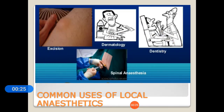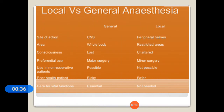The most common uses of local anesthetics are in exercises, dermatology, dentistry, and spinal anesthesia. The main importance of local anesthetics compared to general anesthesia is that local anesthetics act peripherally on a restricted area, making them suitable for minor surgeries and safer than general anesthesia, which affects the whole body.